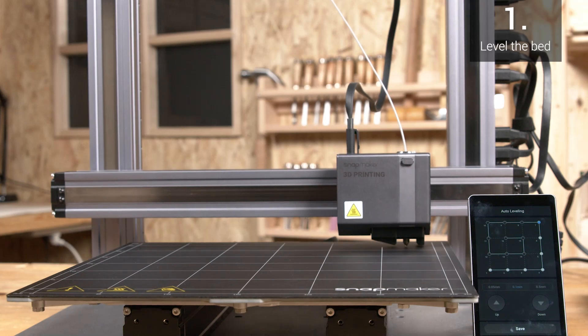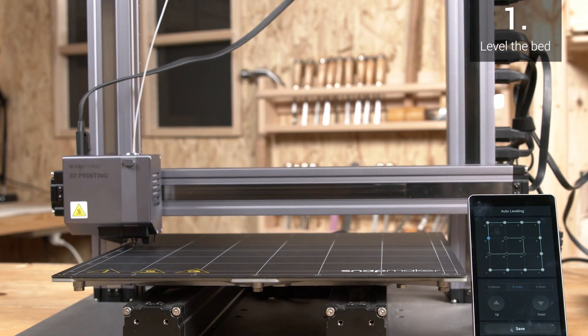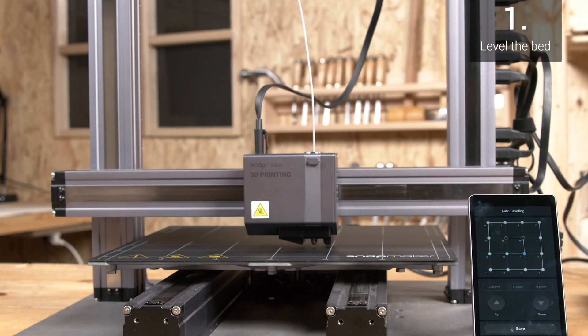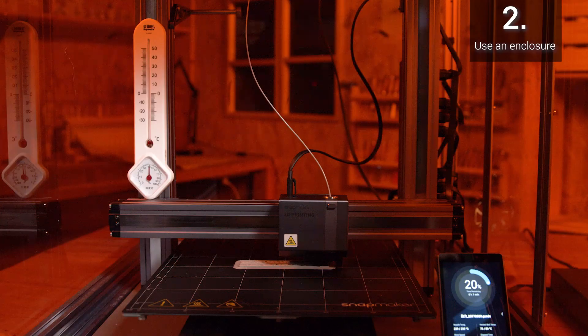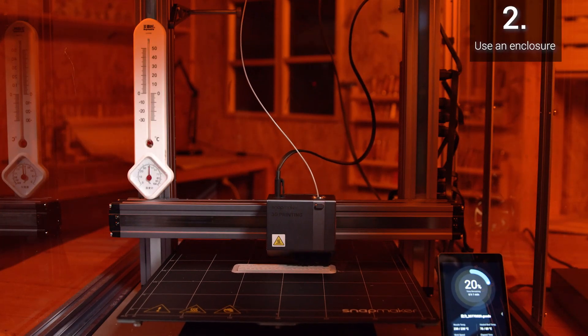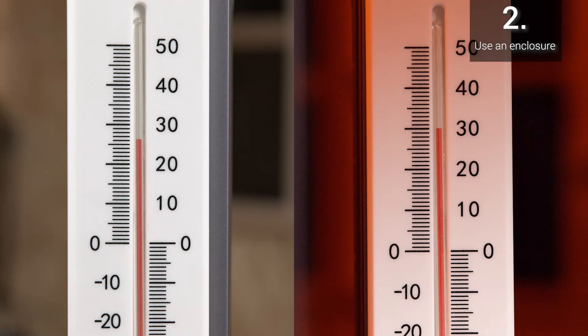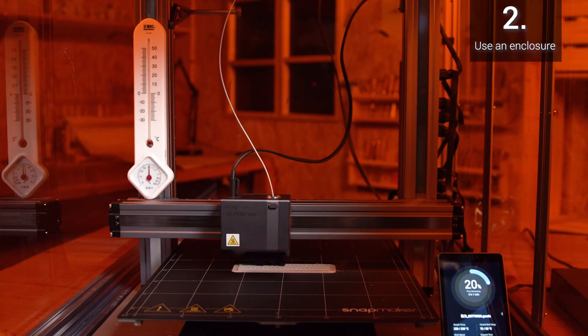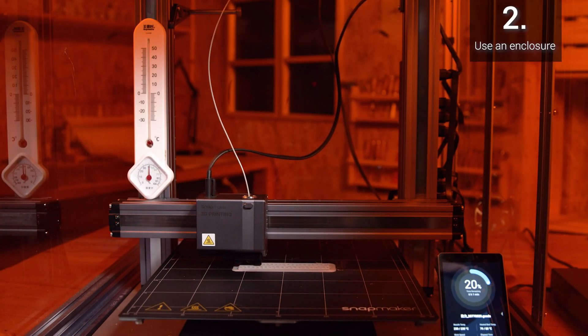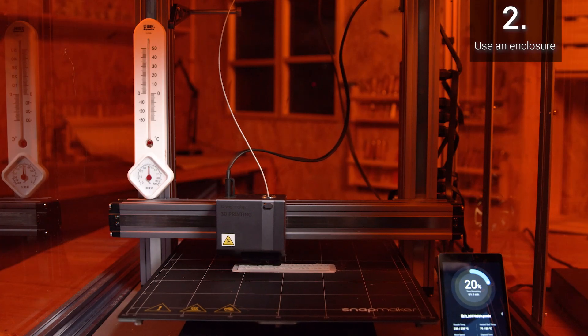To fix this problem, you can try as follows. First, level the bed properly. This applies to all types of filament. Second, as is mentioned above, use an enclosure. Besides exhausting, the enclosure also works as an insulation cover that helps maintain warmth around the nozzle, so that the extruded filament will not contract too much due to temperature variation.